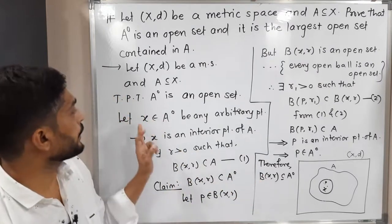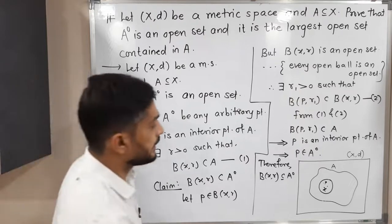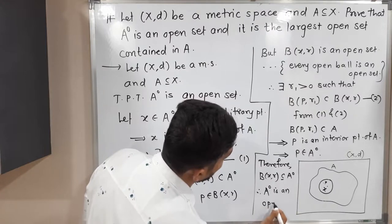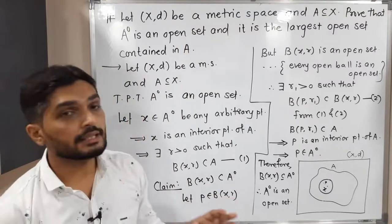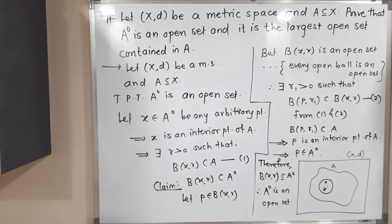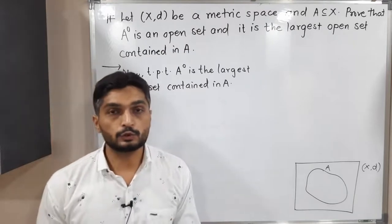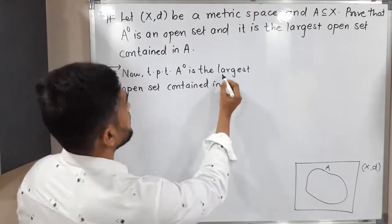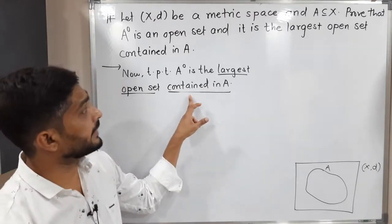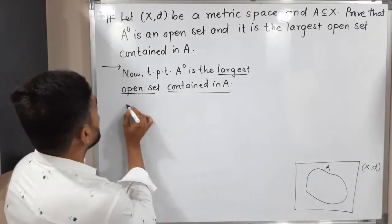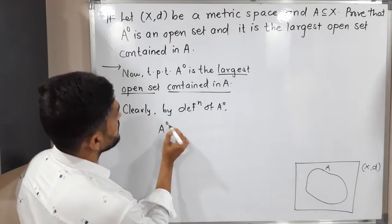So we took any arbitrary point from A interior and we could find a ball around x which is a subset of A interior. By definition of open set we can declare A interior is open. Therefore A interior is an open set — that is proved. But still half the proof is remaining: we have to prove that it is the largest open set contained in A. It is an open set we have already proved. So two tasks remain: showing it is contained in A and that it is the largest open set. Clearly, by definition of A interior, A interior ⊆ A.